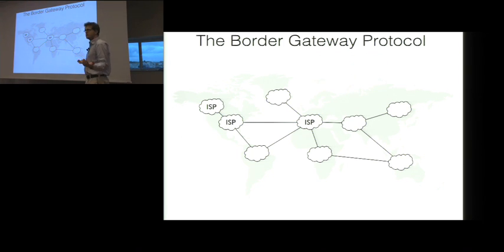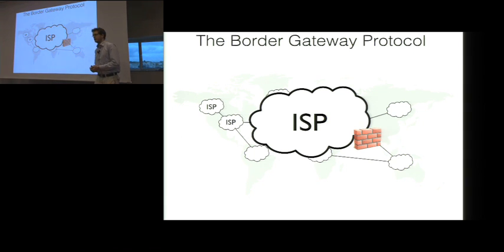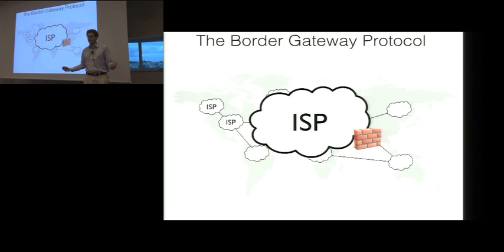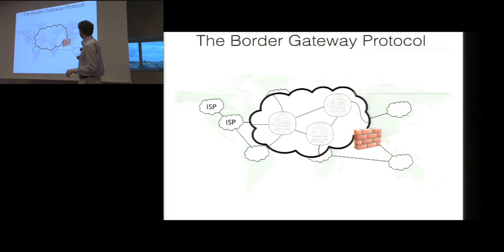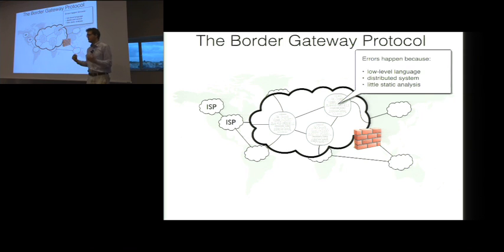What makes BGP different from other routing protocols is that internet service providers can configure custom policies in their BGP configurations. For example, an ISP might implement a policy that blocks routing information to one of its competitors. What makes this hard, though, is that these policies need to be implemented in low-level languages, which are distributed across multiple routers. So if you want to reason about correctness, you actually have to reason about this distributed system, and there are very few static analysis tools that can help with this.